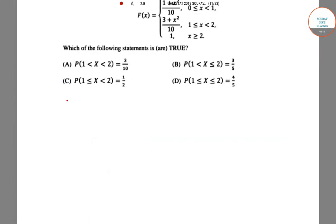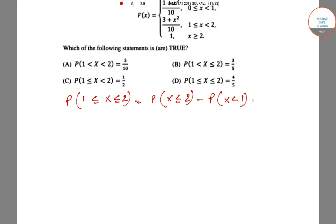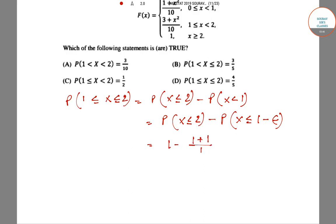For option D, P(1 ≤ X ≤ 2), we write P(X ≤ 2) minus P(X ≤ 1 minus epsilon). The value is 1 minus (1 + 1)/10, which equals 8/10 = 4/5. So option D is also true.